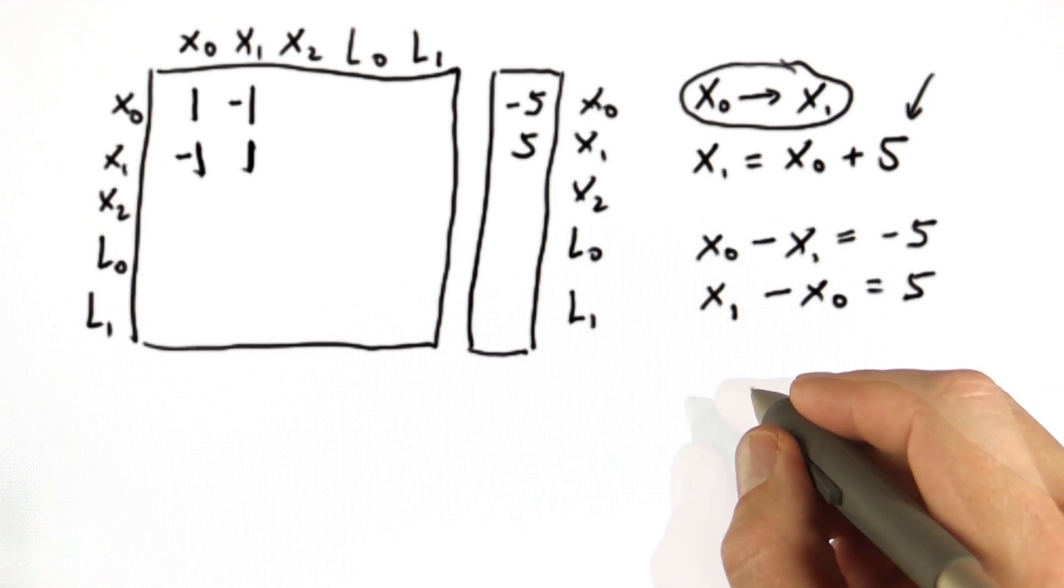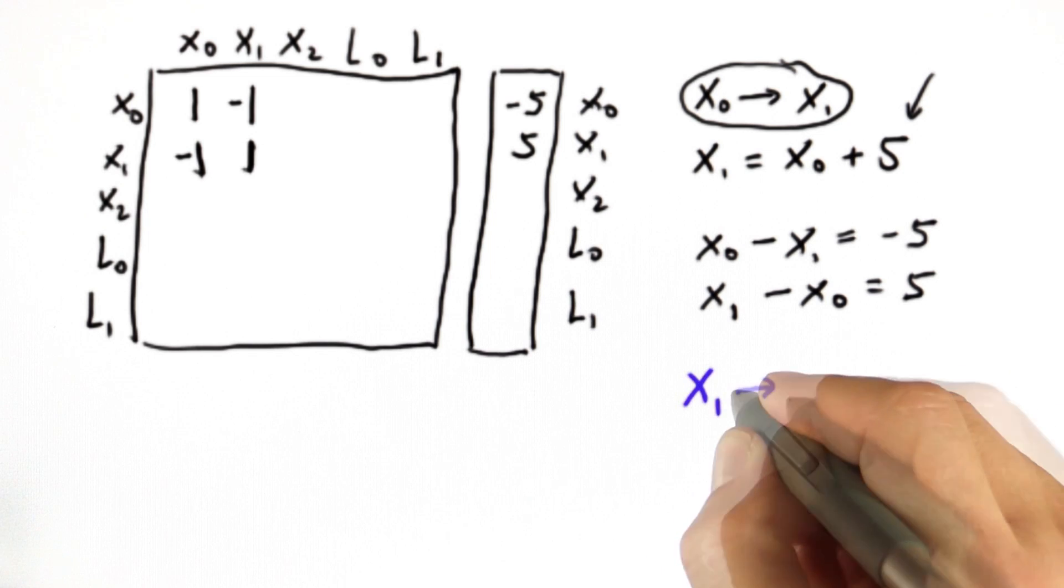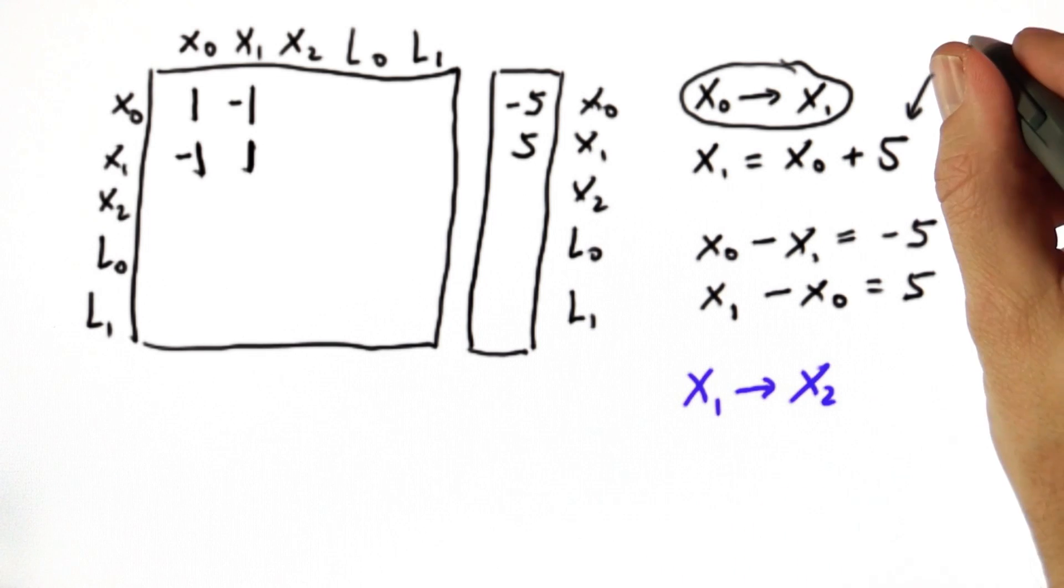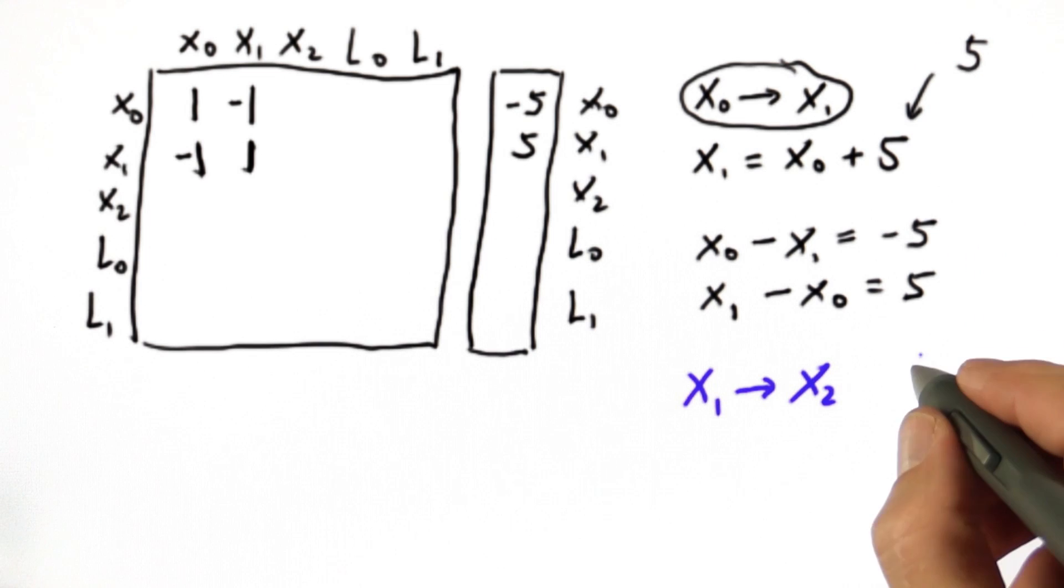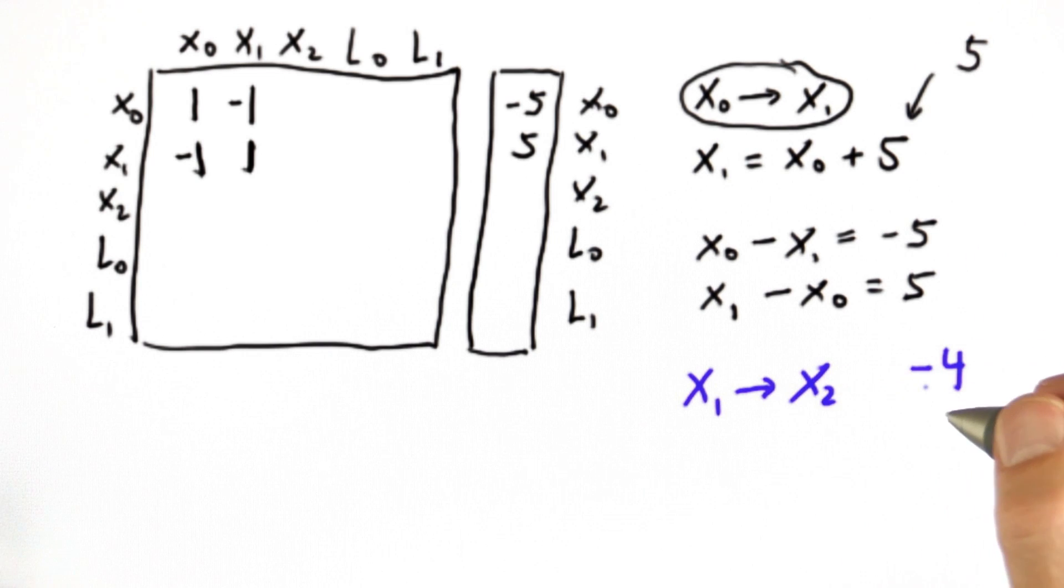So let me ask you a question. Suppose we know we go from x1 to x2, and whereas the motion over here was plus 5, now it's minus 4, so we're moving back in the opposite direction.